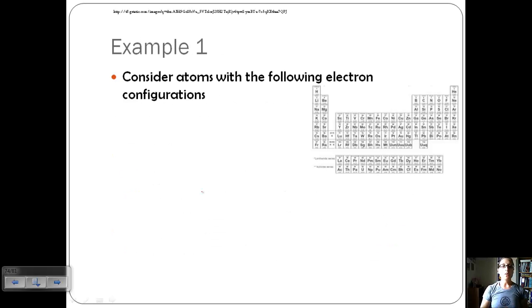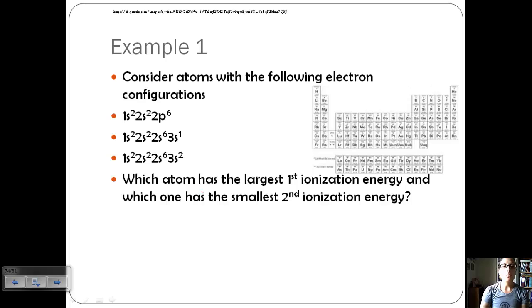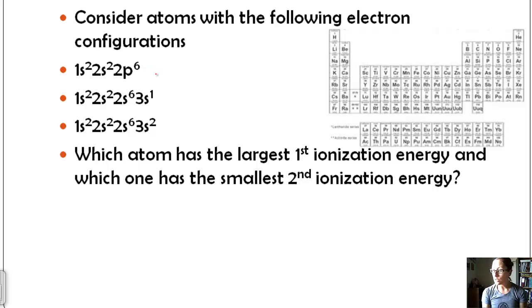Let's look at an example. Consider atoms with the following electron configurations: 1s², 2s², and 2p⁶. Which atom has the largest first ionization energy, and which has the smallest second ionization energy? For first ionization energy, the largest means it is the most difficult to remove. The hardest to remove is the atom with configuration 1s², 2s², 2p⁶ — that puts us right at neon.